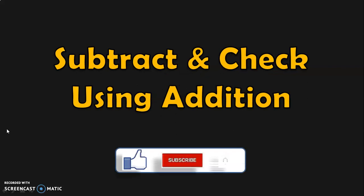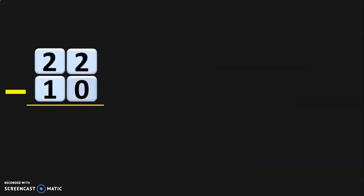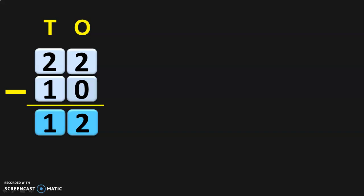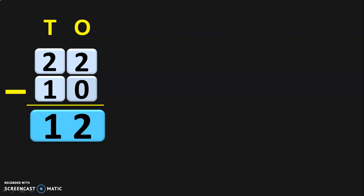Now that you have learned to subtract, let us do the next topic: subtract and check your answer using addition. The first sum is twenty-two minus ten. Write down the place values and begin the subtraction from the ones place. Two minus zero will give you two. Move on to the tens place where two minus one gives you one. So subtraction of twenty-two minus ten gives you the answer 12. How do you check if the subtraction is correct? You can do this by the process of addition.